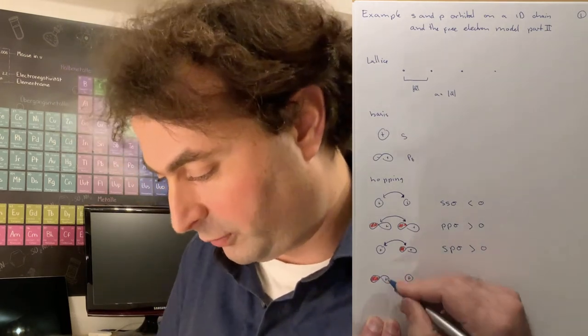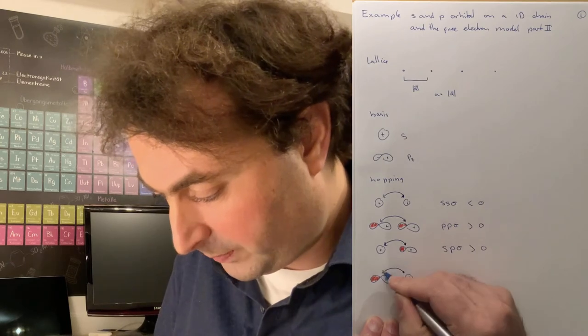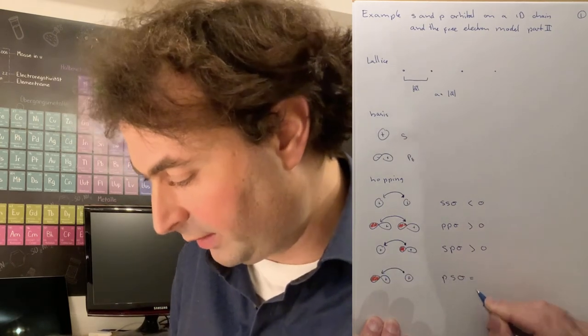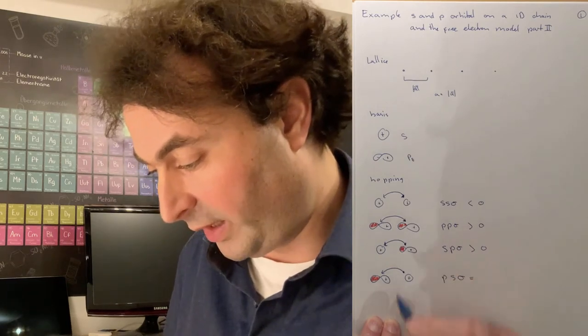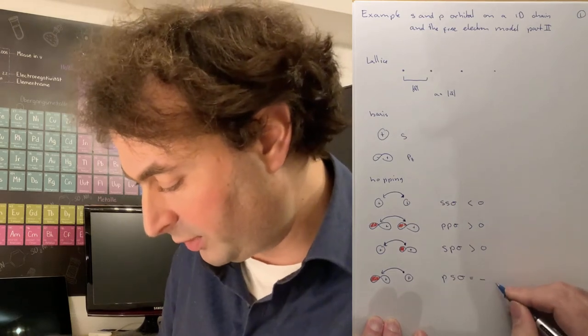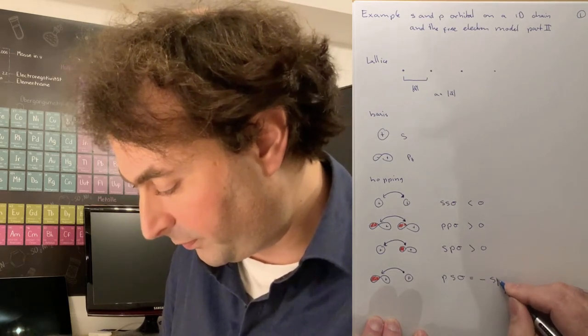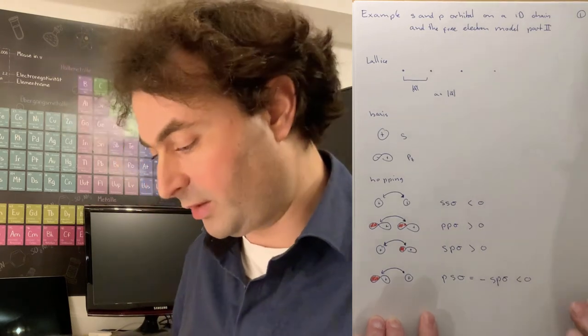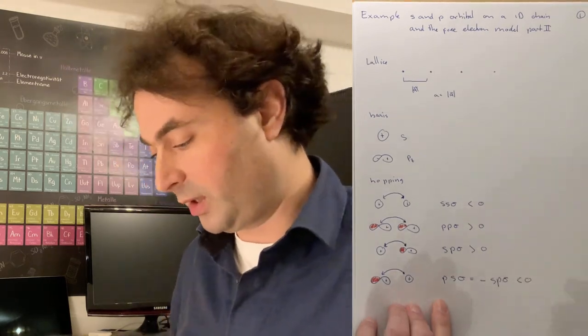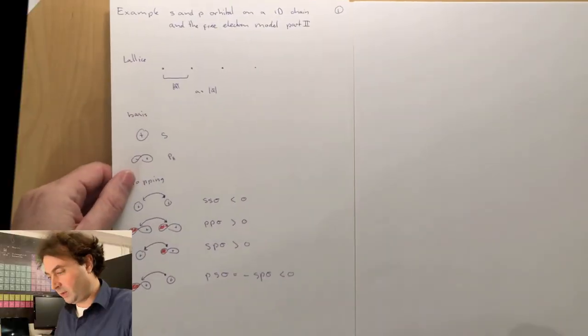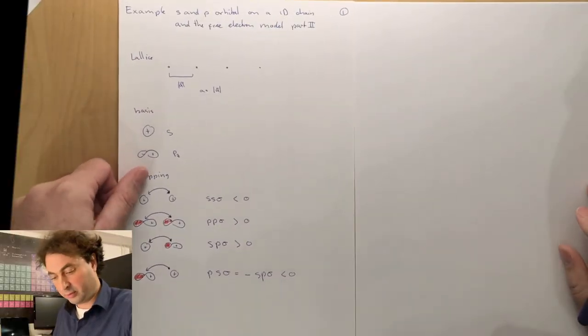There is another matrix element, which by symmetry is related to the one we had before. That is going from the p to the s, so ps sigma. This is equal to sp sigma with a minus sign because here I have a plus lobe pointing towards a plus lobe. So this is minus sp sigma and therefore smaller than zero. We'll use sp sigma as the matrix element with an additional minus sign for the hopping to the left.